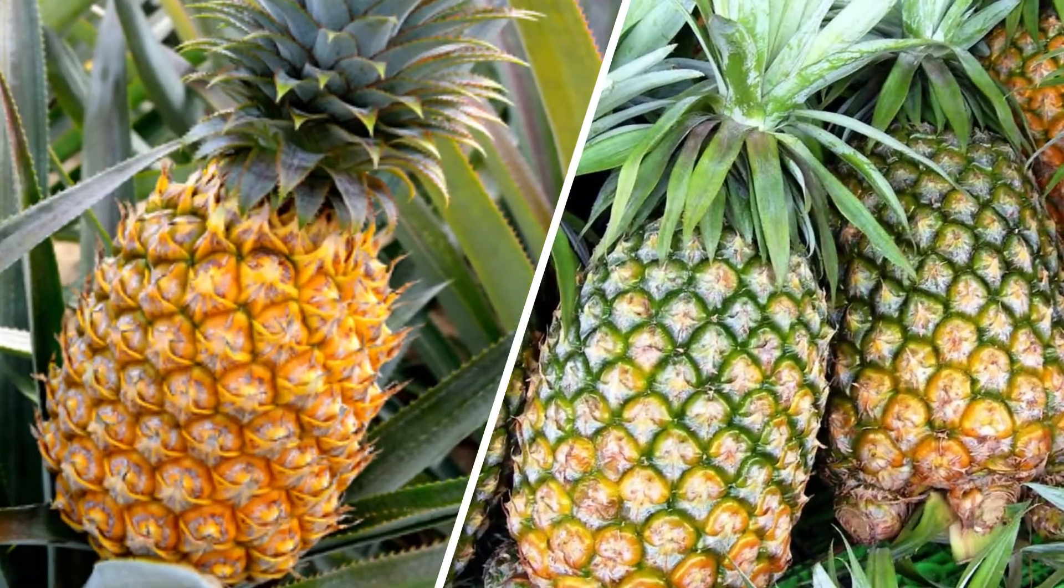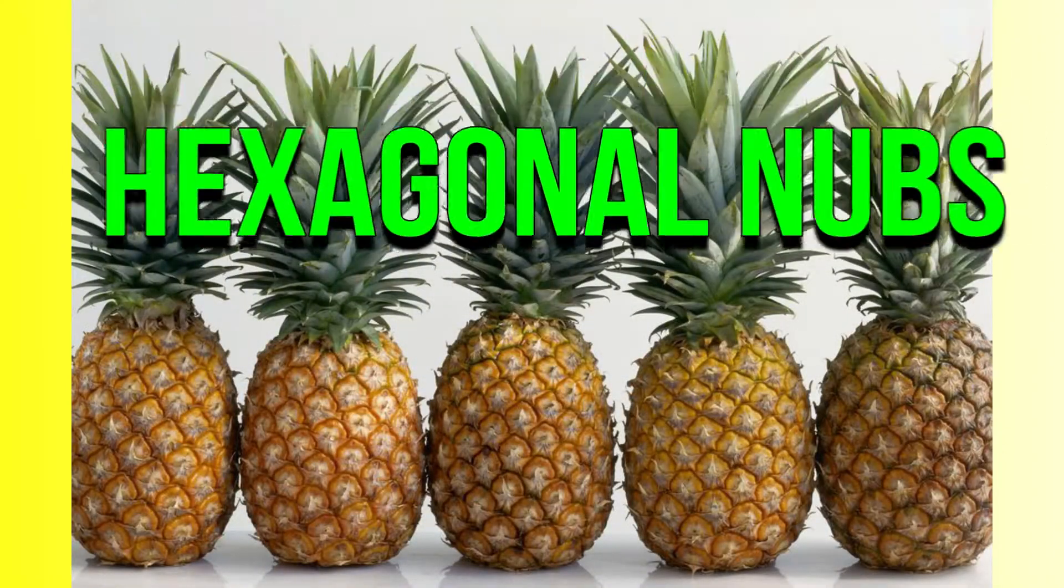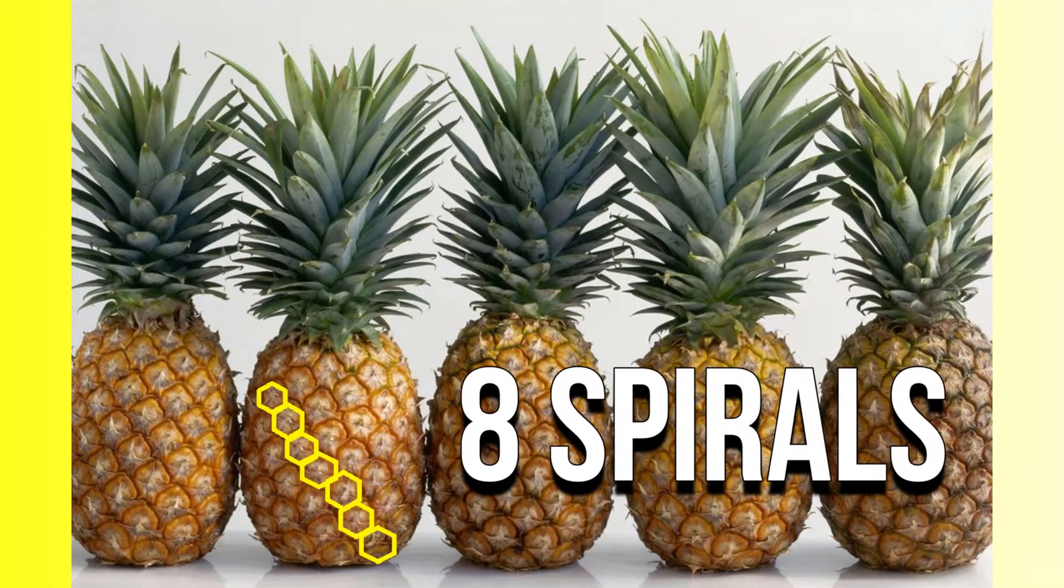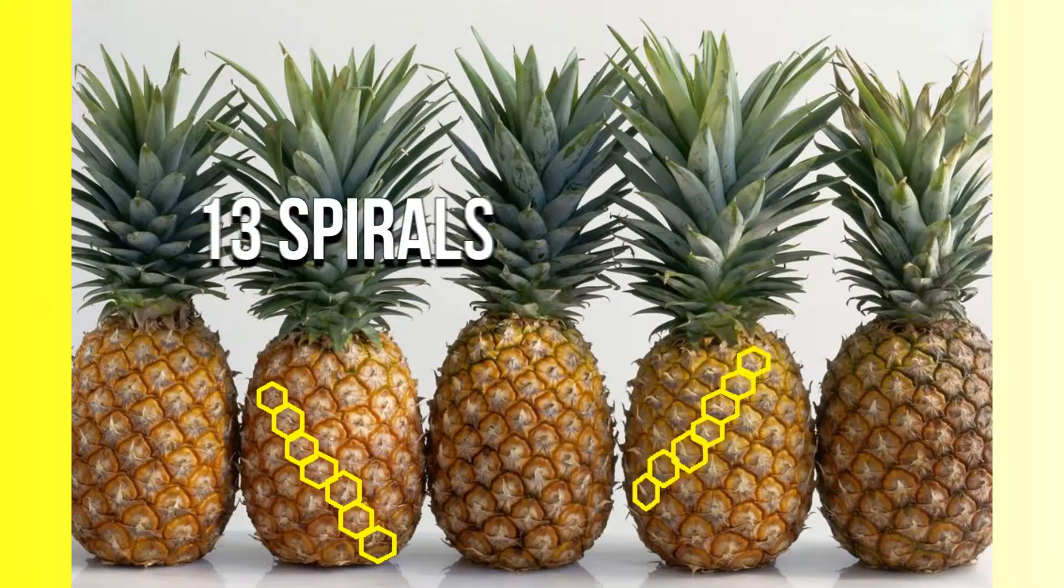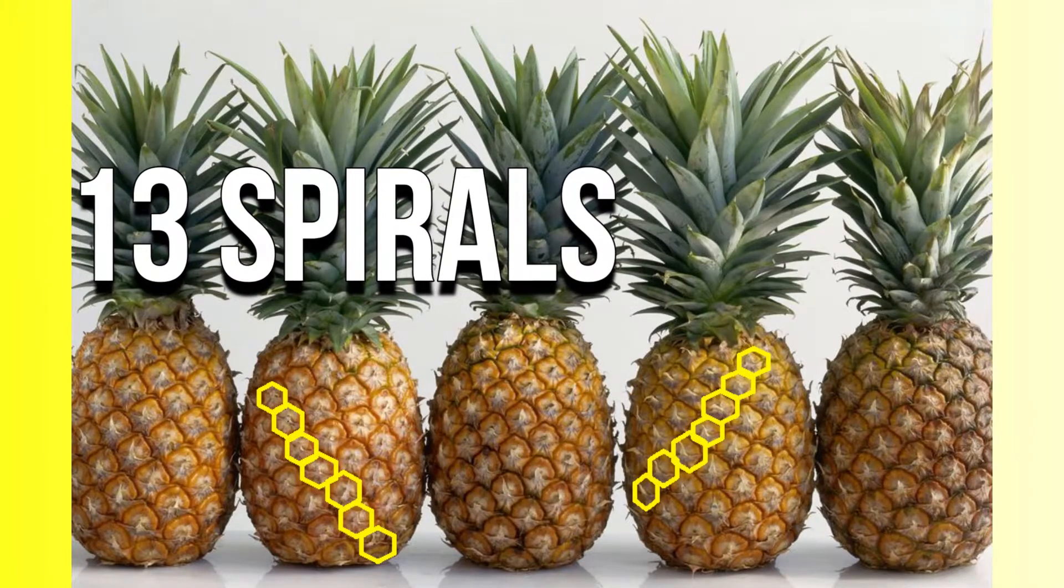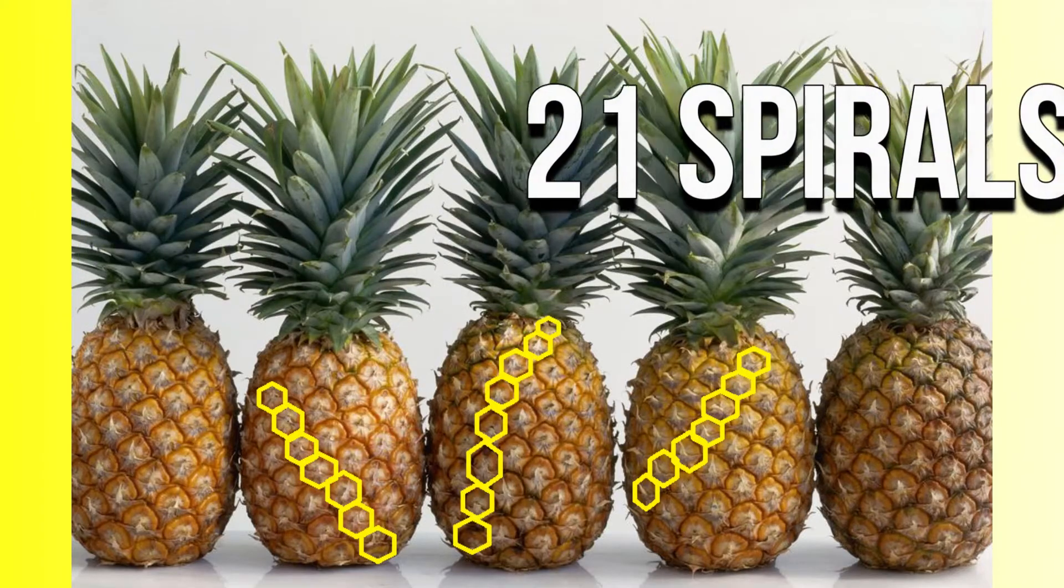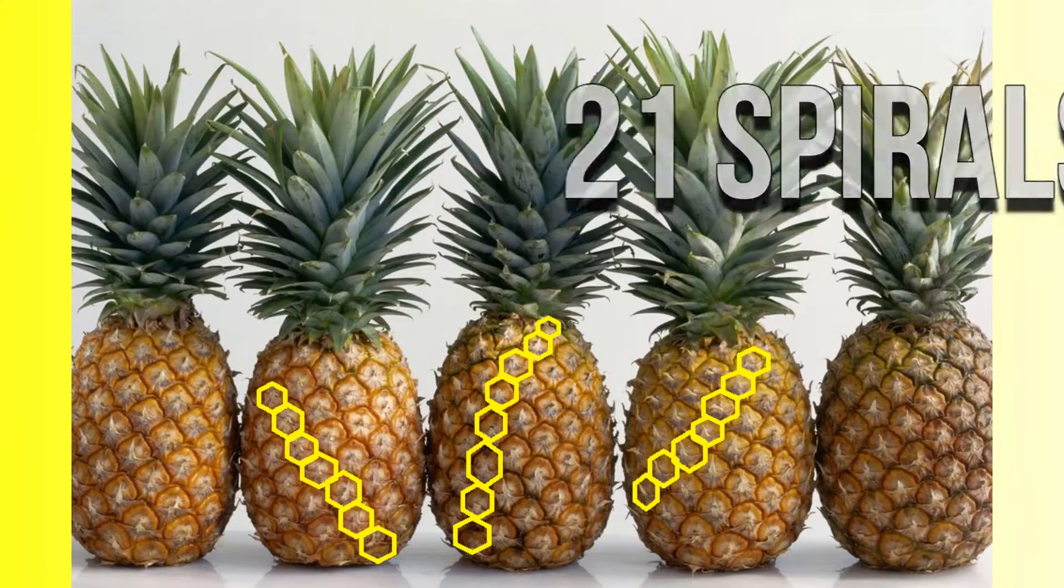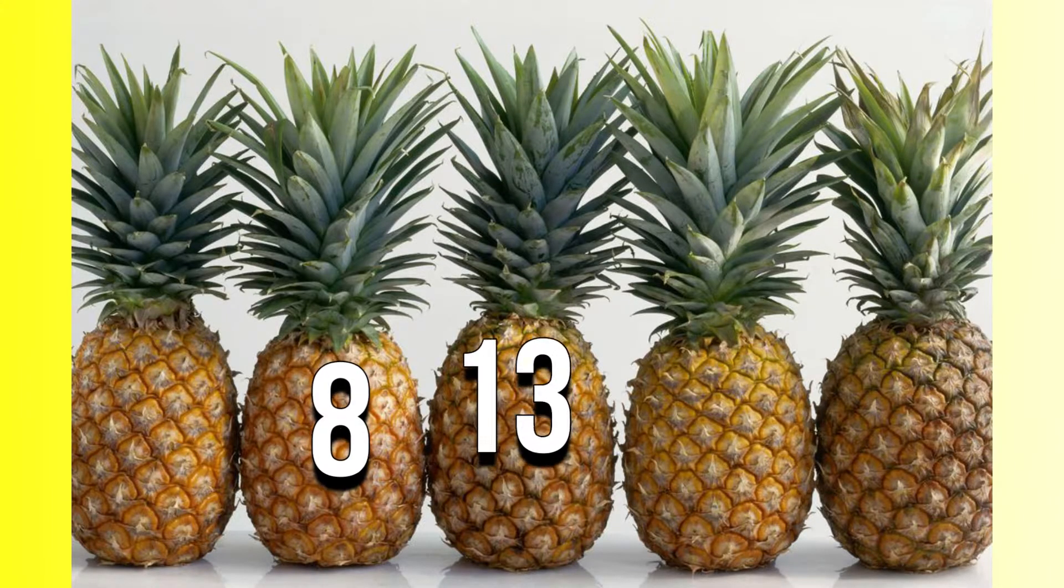Let's take a look at pineapples. Pineapples have spirals formed by their hexagonal nubs. The nubs on many pineapples form eight spirals that rotate diagonally upward to the left and 13 spirals that rotate diagonally upward to the right. We can also observe 21 parallel rows of nubs spiraling steeply. And again, the numbers 8, 13, and 21 are consecutive Fibonacci numbers.